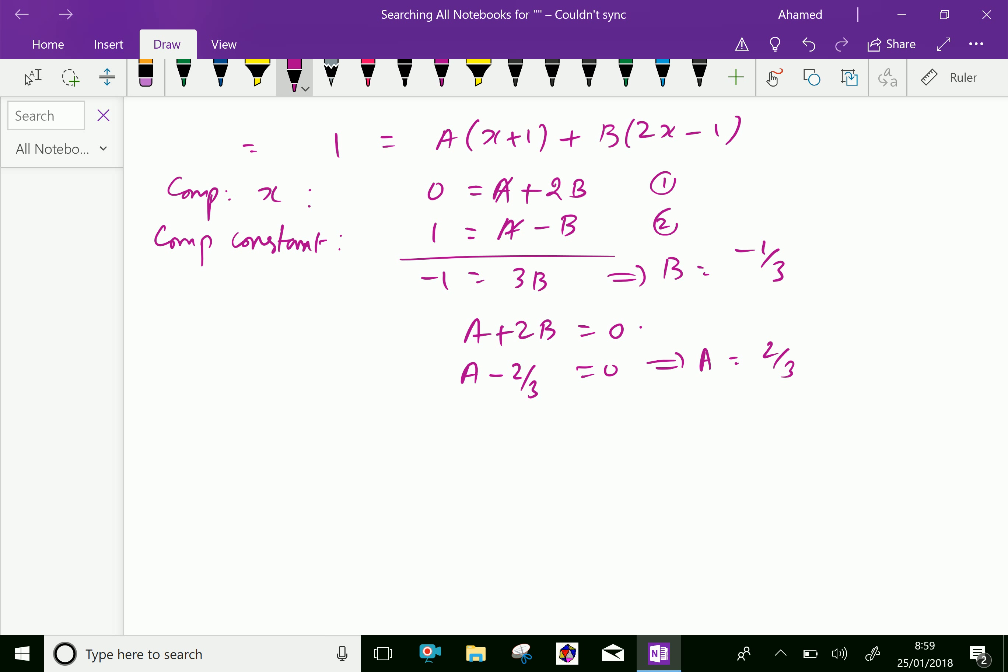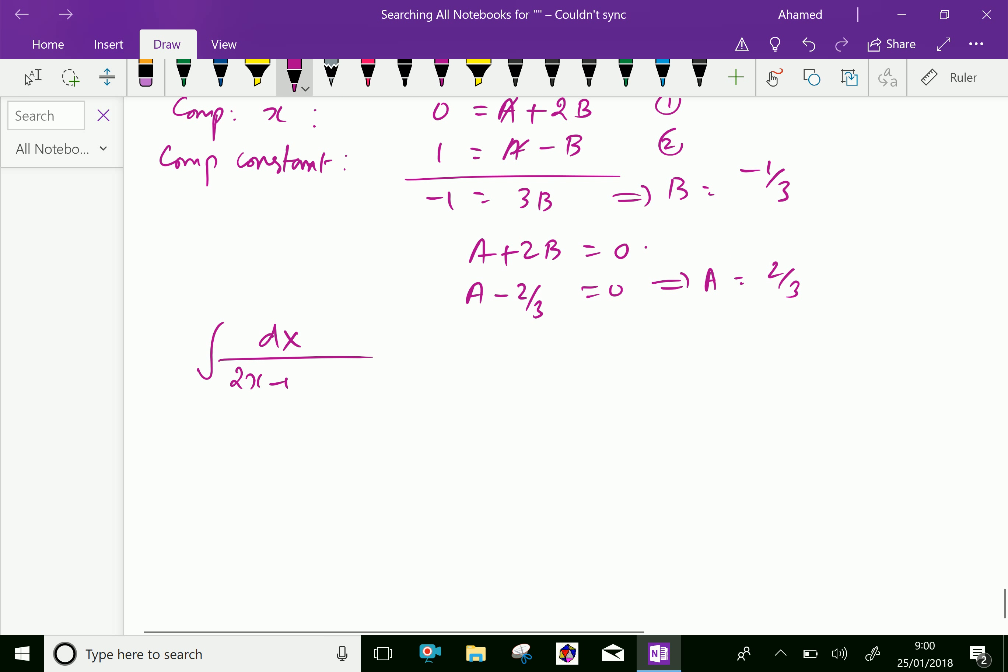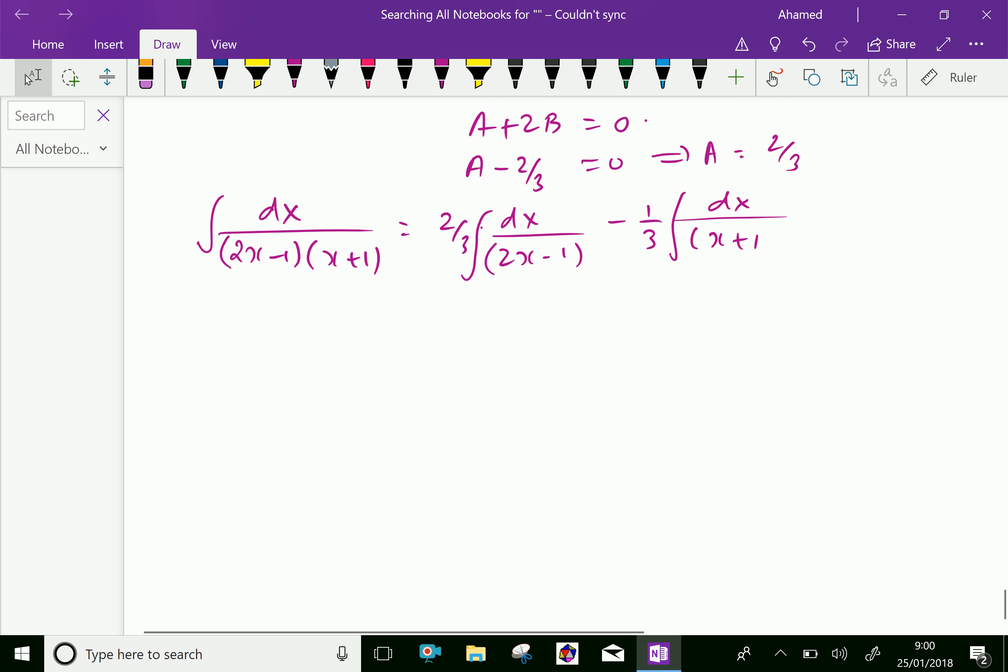Now let us write one more time the integration: dx over 2x minus 1 into x plus 1 equals 2 over 3 dx by 2x minus 1 minus 1 over 3 dx over x plus 1. Put integrated inside both sides, then we can integrate because numerator and denominator are linear factors.